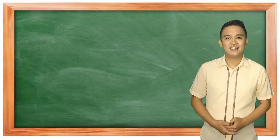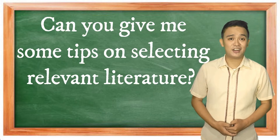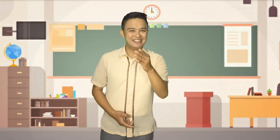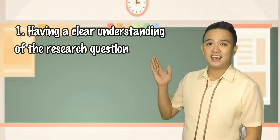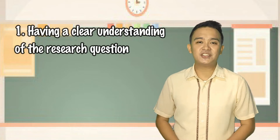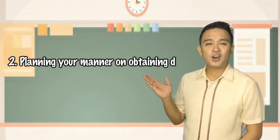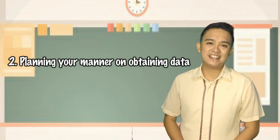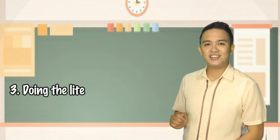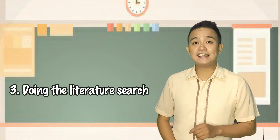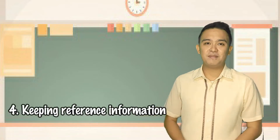Next question: Can you give me some tips on selecting relevant literature? Indeed! First is having a clear understanding of the research question. Second, planning your manner on obtaining data. Third is doing the literature search. And lastly, keeping reference information.